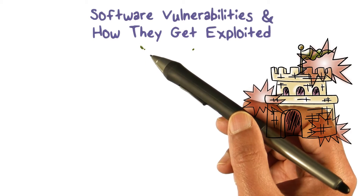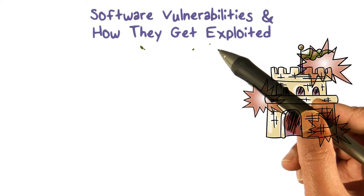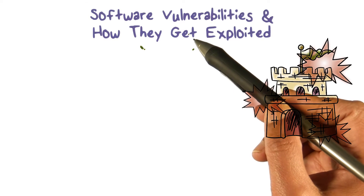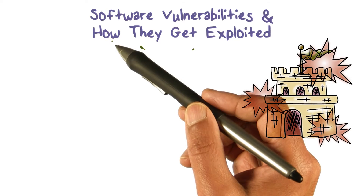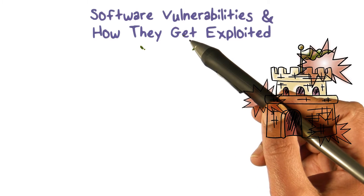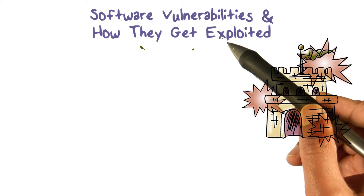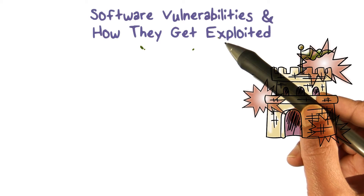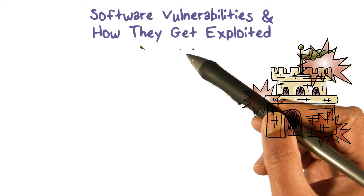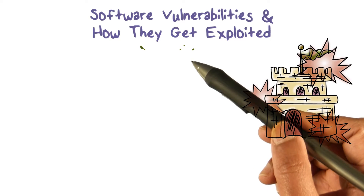Software is what controls our computer systems. We get things done by running software that we write or somebody else has written for us. We're going to talk about exactly what those bugs are that actually turn into vulnerabilities, and also how exactly those bugs or errors get exploited.